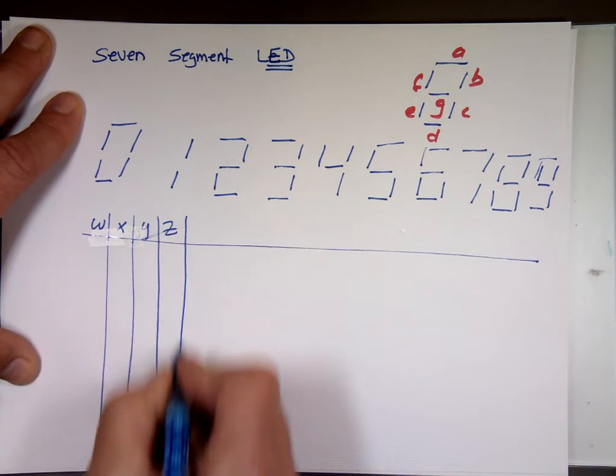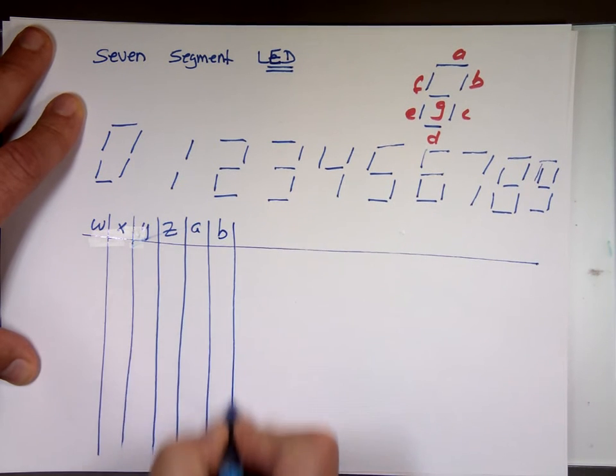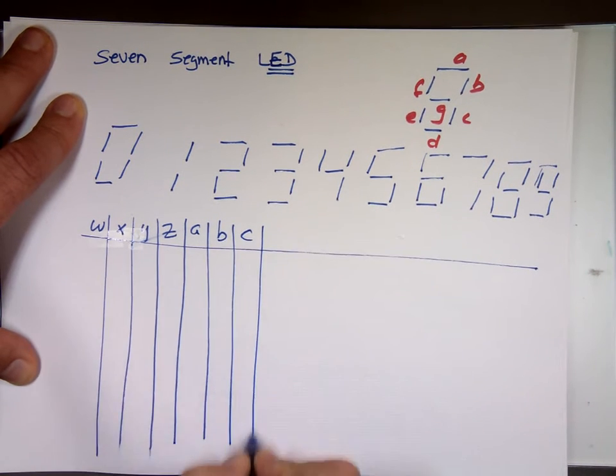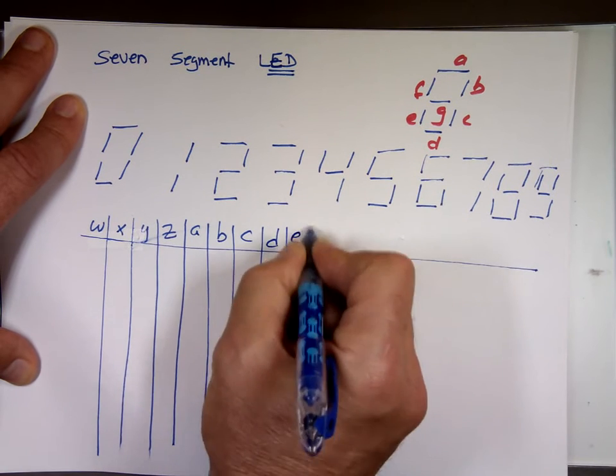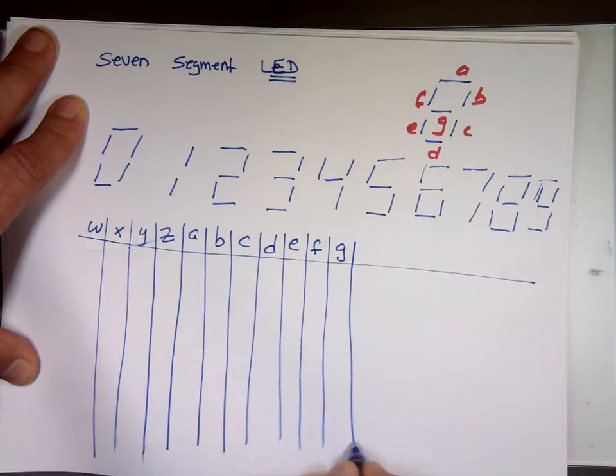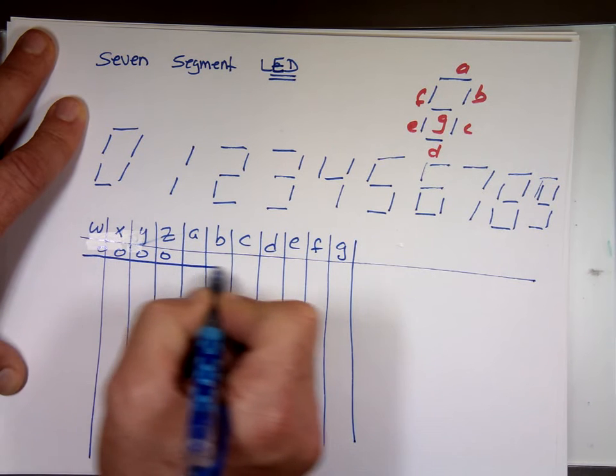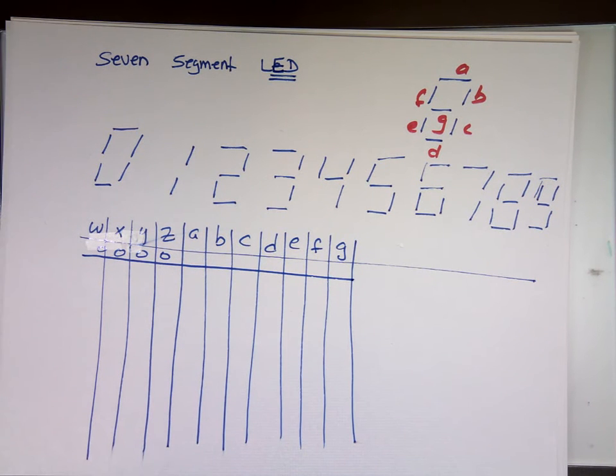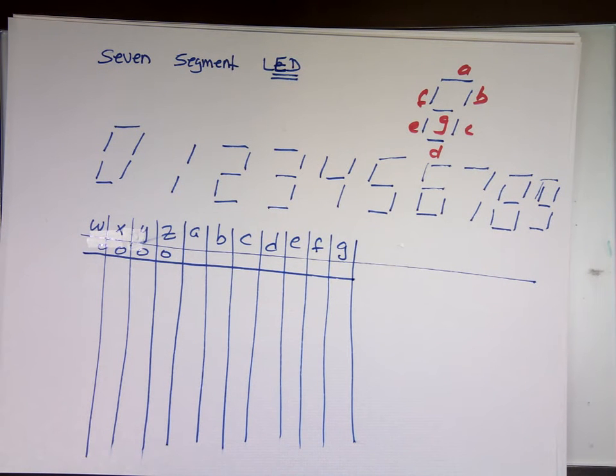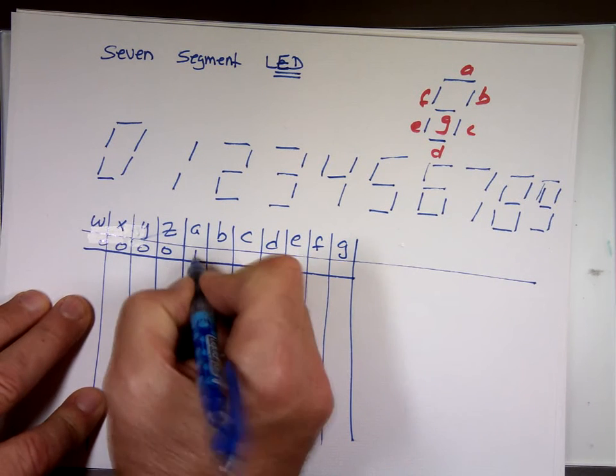So the A, B, these are the outputs. C, D, E, F, G. If you put 0, 0, 0, 0, which one you want to light? That's equivalent decimal to what? The number 0. And the number 0 is going to be all of them except what? G, right? So you want all of them to be on except G.